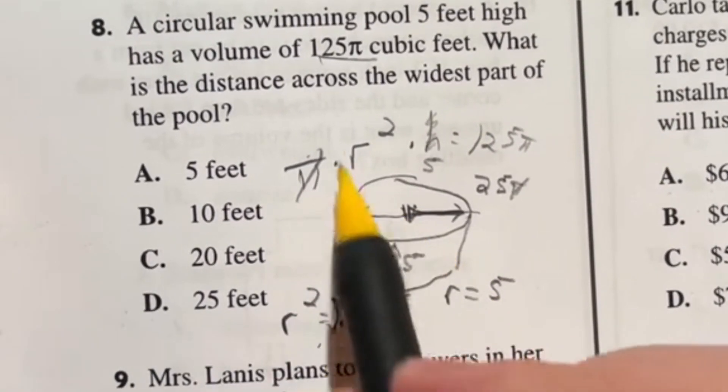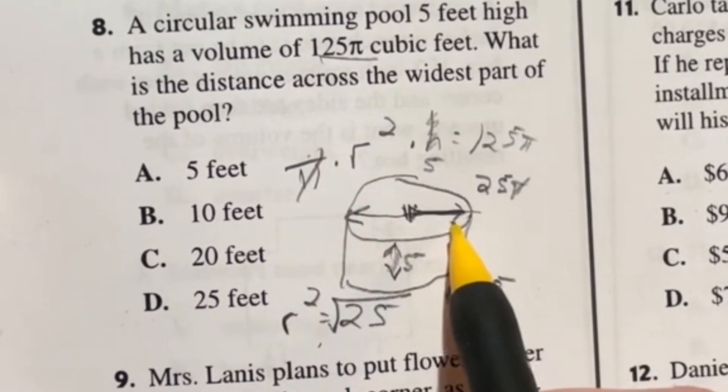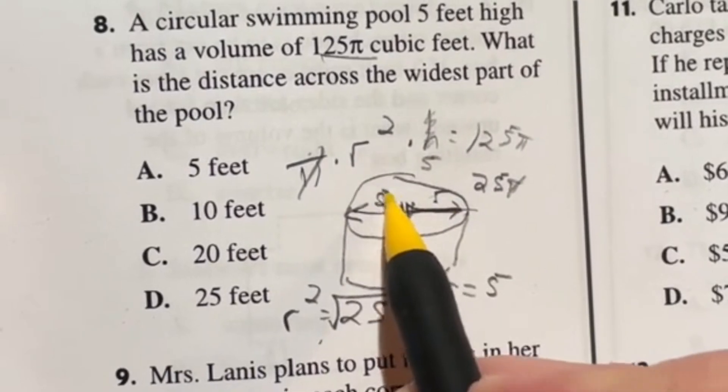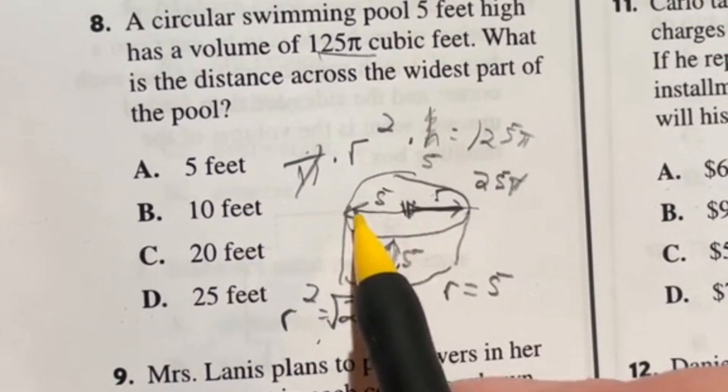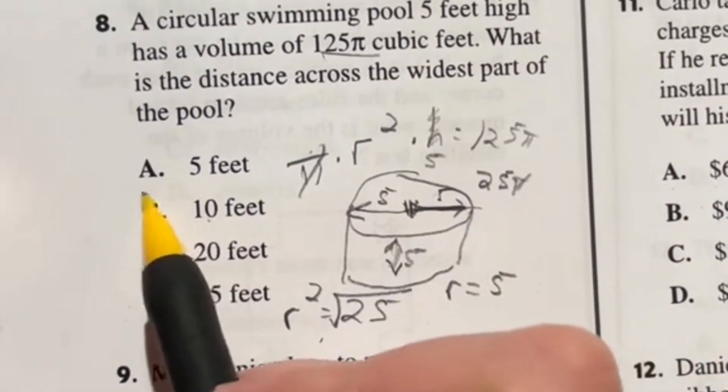So that means if I want to know the distance all the way across the longest one, that would be 5 plus another 5 for the other half, because radius is only half of that, which now we have the diameter of 10 feet, which is answer B.